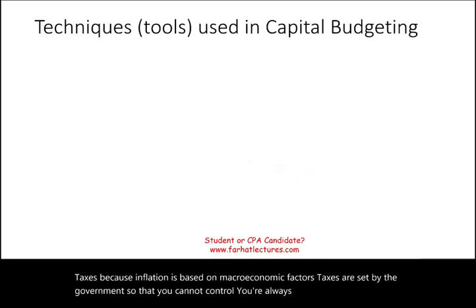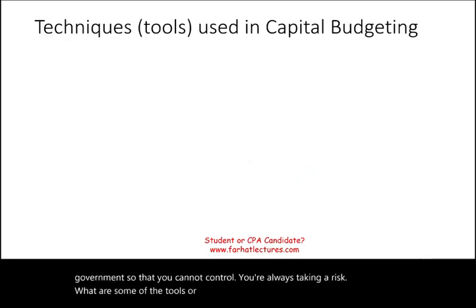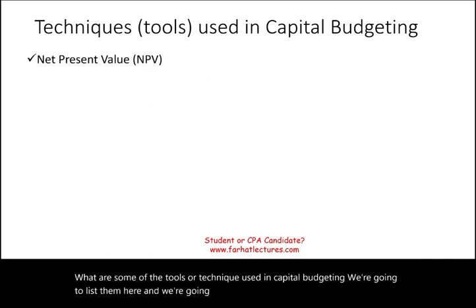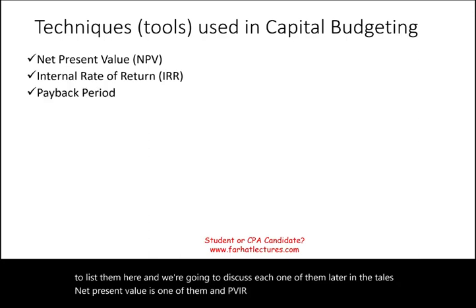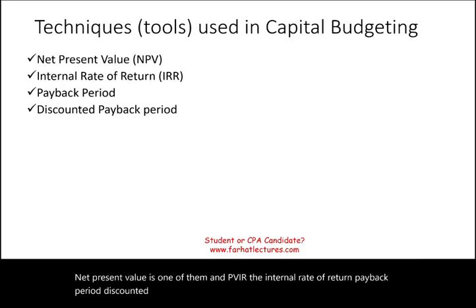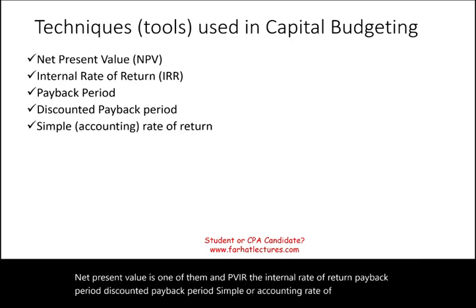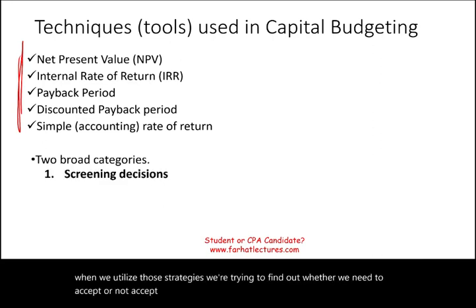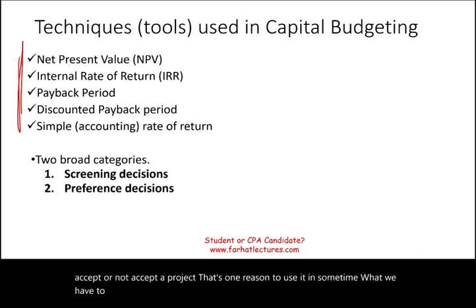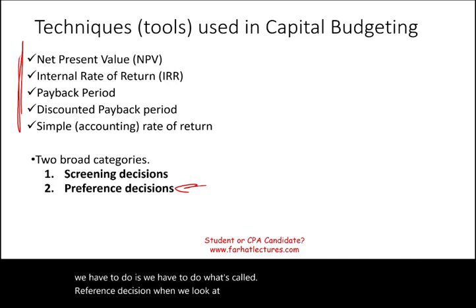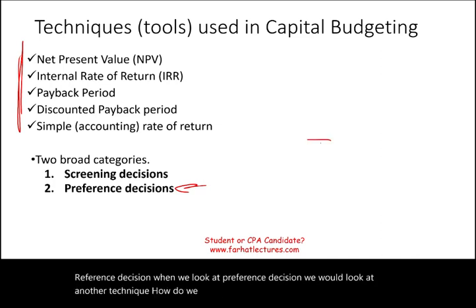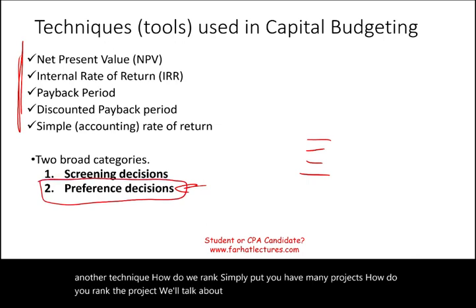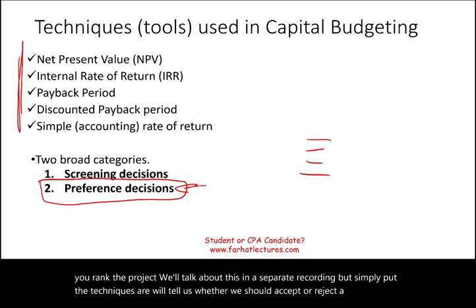What are some of the tools or techniques used in capital budgeting? We're going to list them here and discuss each one in detail later. Net present value is one of them — NPV. IRR, the internal rate of return. Payback period. Discounted payback period. Simple or accounting rate of return. When we utilize those strategies, we're trying to find out whether we need to accept or not accept a project. And sometimes we have to make a preference decision — how do we rank projects? Simply put, you have many projects and you need to rank them. The techniques will tell us whether we should accept or reject a project based on our criteria.